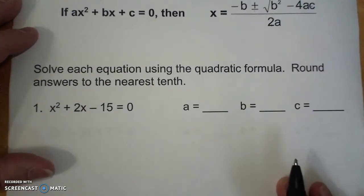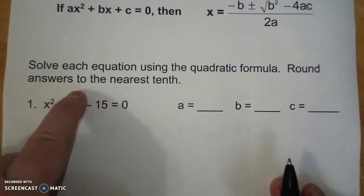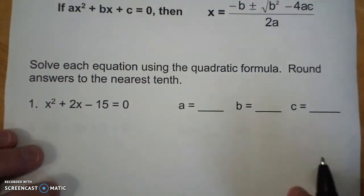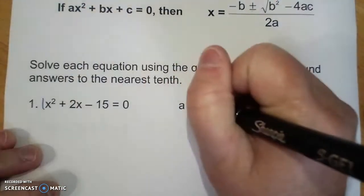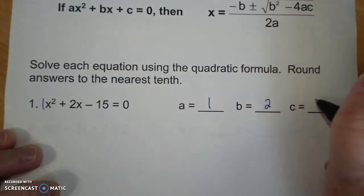We're going to do the same thing. And if you have to round, you're always going to round to the tenth. So if I have a is 1, b is 2, c is negative 15.